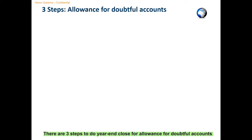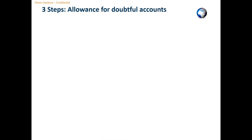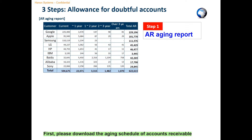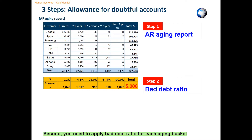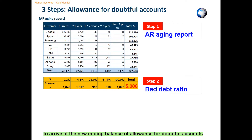There are three steps to do year-end close for allowance for doubtful accounts and bad debt expense. First, please download the aging schedule of accounts receivable from your ERP system, such as SAP. Second, you need to apply the bad debt ratio for each aging bucket to the corresponding AR balance in the aging schedule to arrive at the new ending balance of allowance for doubtful accounts as of year-end.